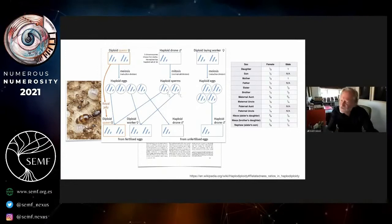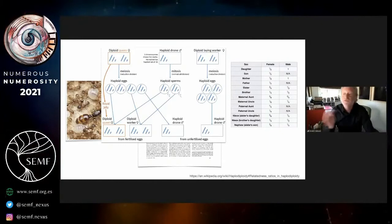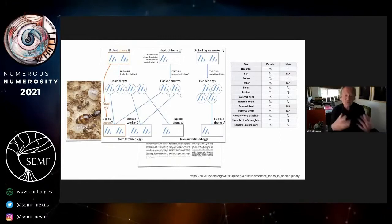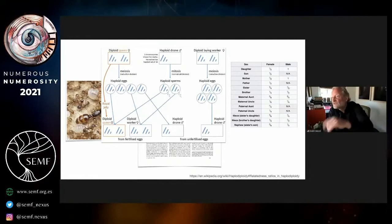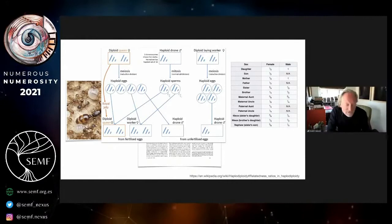It gets more and more complicated. The consequence of this strange system of chromosomal segregation and fertilization is you get weird coefficients of relatedness. They're not like ours, where full siblings are a half. You get sisters related to a sister with three-quarters, sons to their mothers with one, mothers to their sons with a half. They're even asymmetric, these coefficients of relatedness.